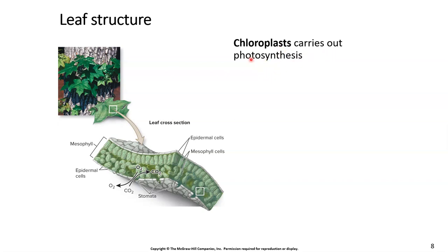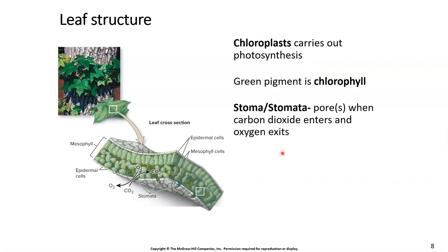Chloroplasts are these little green organelles designed to carry out photosynthesis. The green color of the chloroplast is due to a pigment called chlorophyll — the pigment or dye is called chlorophyll, while the structure itself is called a chloroplast. A stoma is singular and stomata is plural — these are the holes found in our leaf. We produce gases including carbon dioxide and oxygen, and we need a pore to let gas go in and out of the leaf. These pores are called stomas or stomatas, similar to how your skin has pores.